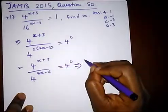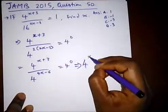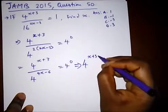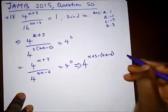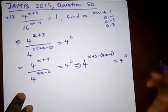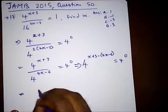Since the bases are the same, remember when we are dividing we subtract the powers: so x plus 3 minus bracket 4x minus 6 equal to 4 raised to power 0.